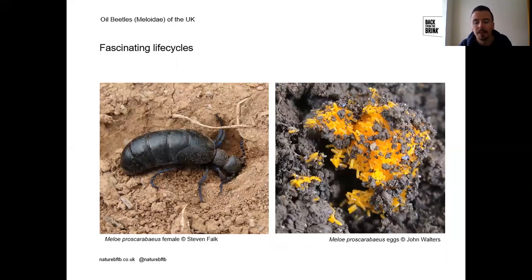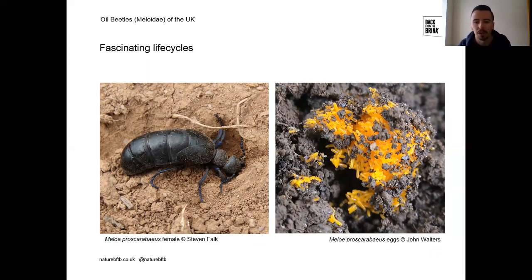Once females have mated, they look for a suitable nest-laying site — often areas of bare, compacted ground. This frequently brings them into contact with people on footpaths, where compaction and erosion create ideal bare ground. A female black oil beetle is shown excavating a nest burrow into which she'll lay her eggs — possibly upwards of a thousand eggs per burrow — across as many burrows as possible. So few reach adulthood that laying large numbers of eggs is essential.